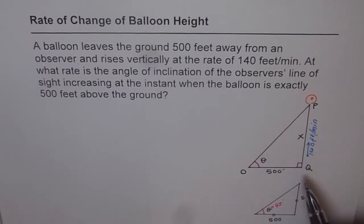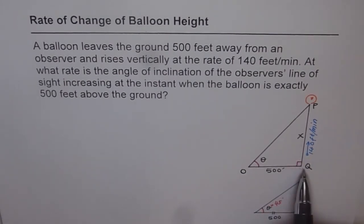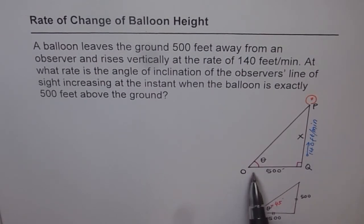So here we have a diagram which depicts the situation. Observer O is 500 feet from the point where the balloon was released. Now it rises up at the rate of 140 feet per minute. Now you'll note OQ is a constant distance. It does not change.